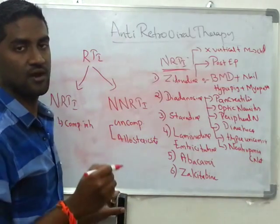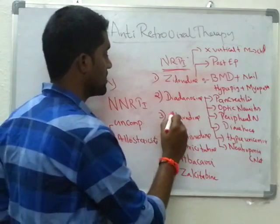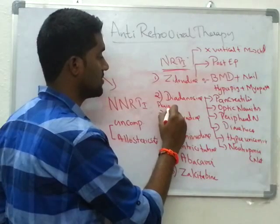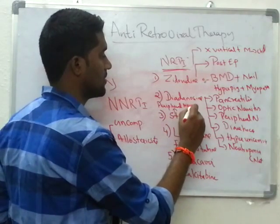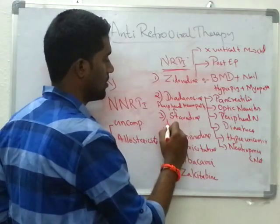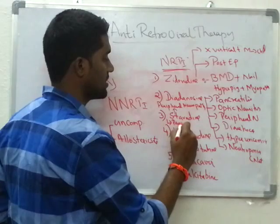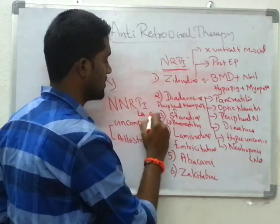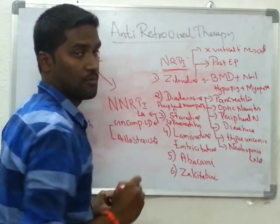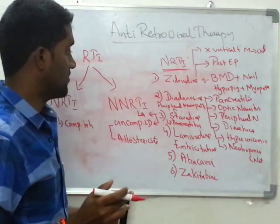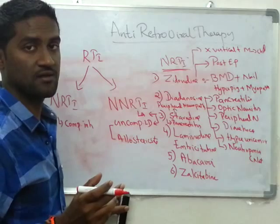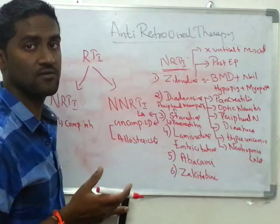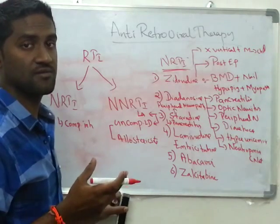Coming to Stavudine, the dose-limiting side effect is peripheral neuropathy, and it can also cause pancreatitis. Two more important side effects: it causes lactic acidosis and maximum lipodystrophy. So for Stavudine, remember the dose-limiting side effect is peripheral neuropathy, it can cause pancreatitis, and also maximum lactic acidosis and lipodystrophy.